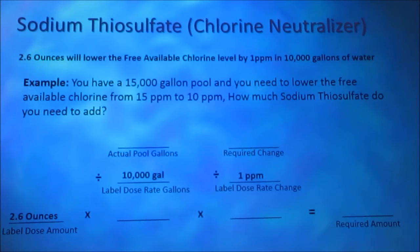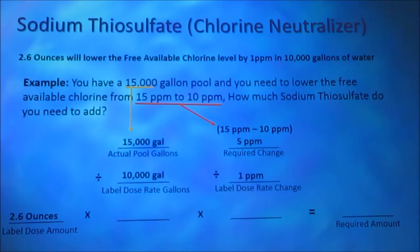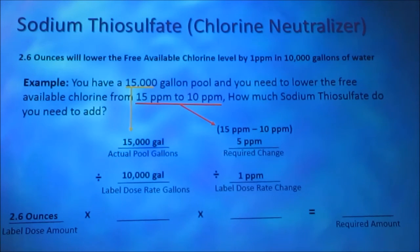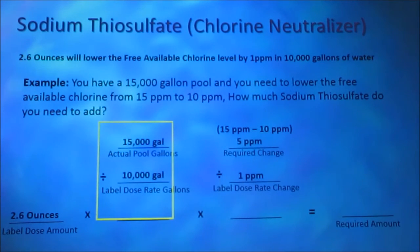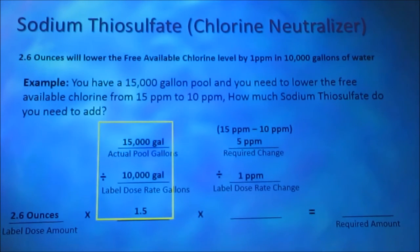Our actual pool gallons is 15,000 gallons. Our required change is 5 parts per million — we're at 15 parts per million and we want to lower that to 10 parts per million. 15 minus 10 is 5. We divide 15,000 gallons by 10,000 gallons — our actual pool gallons divided by our label dose rate gallons — giving 1.5. We have 10,000 gallons of water 1.5 times.